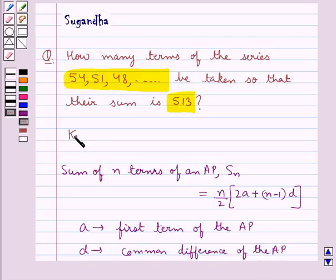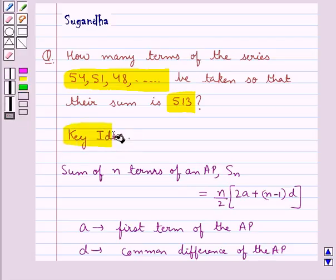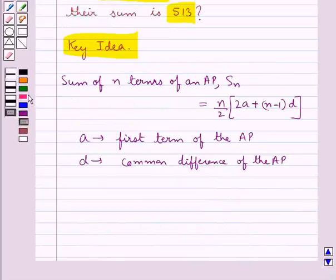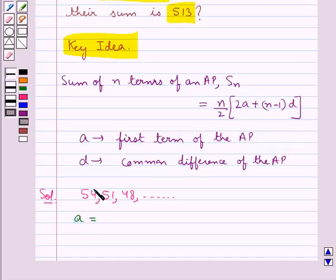This is the key idea to be used in this question. Let's move on to the solution now. The given series is 54, 51, 48 and so on, where the first term a is 54 and the common difference d equals 51 minus 54, which equals -3.